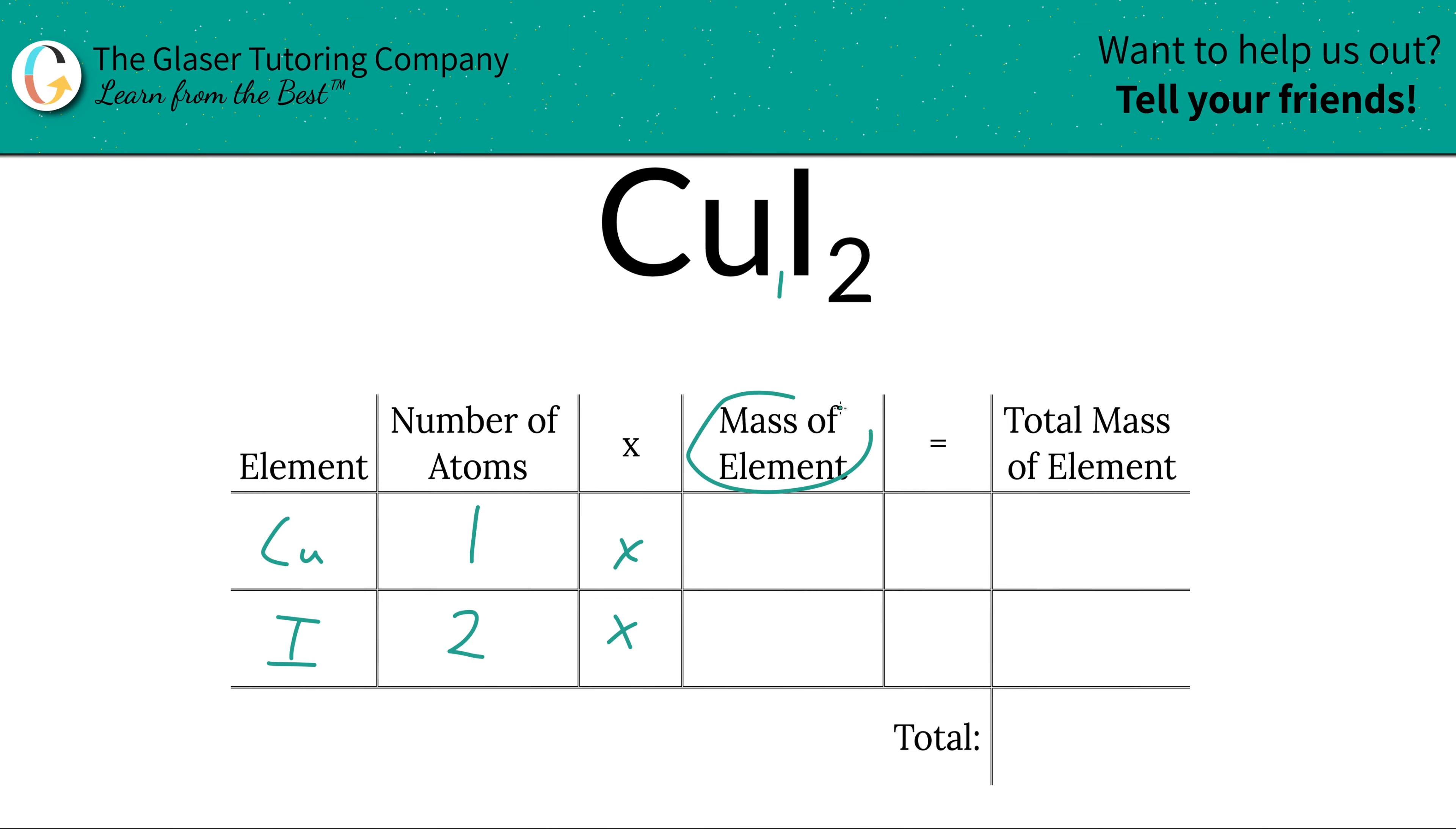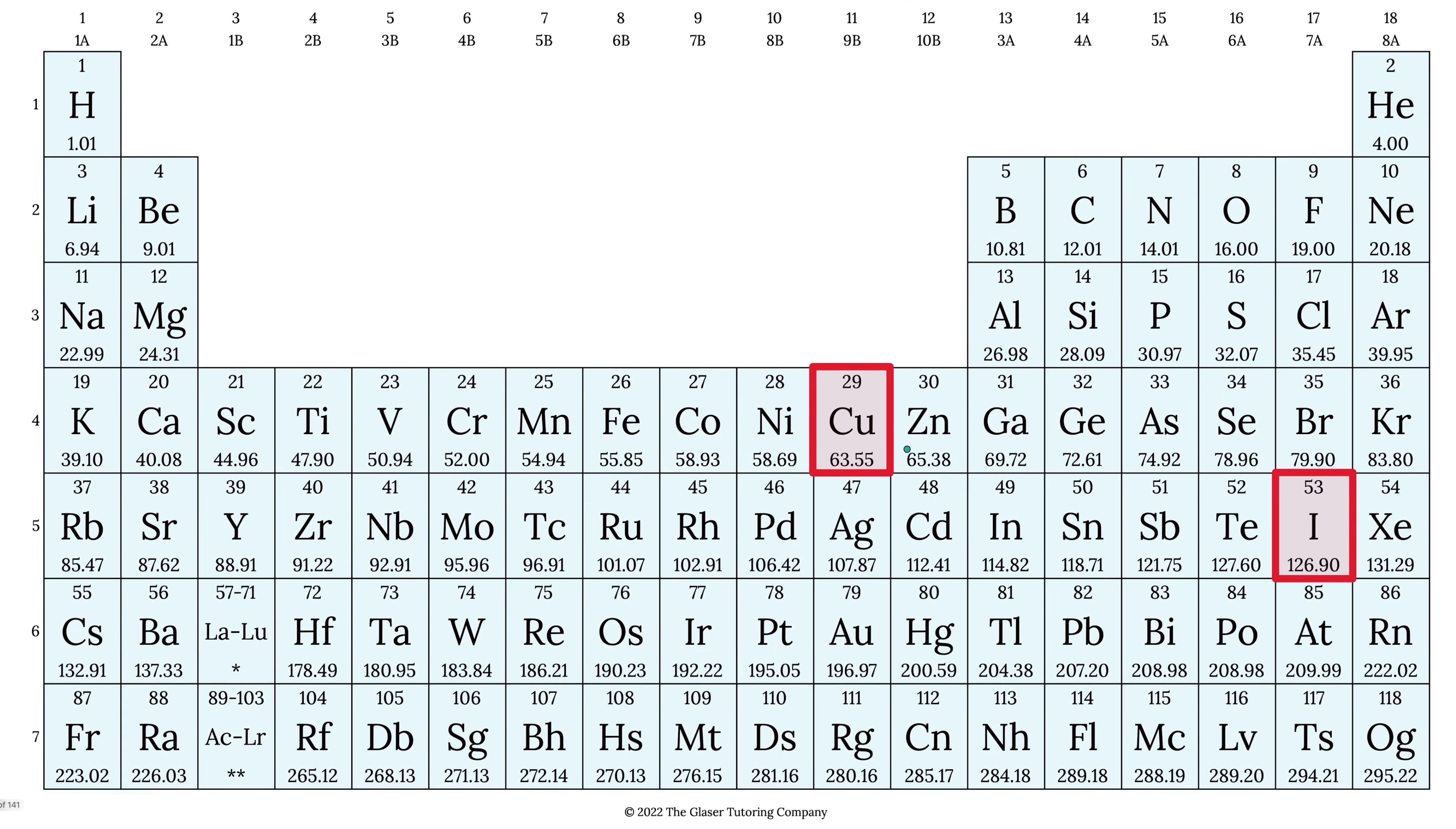Next, we're going to take those number of atoms and multiply it by the mass of the element. Where do we find the mass? You guessed it, periodic table.